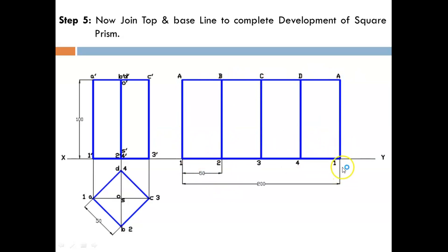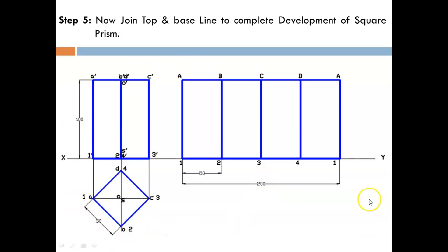After one complete rotation of the square prism, the total base length of the development equals the perimeter of the square — that is 50 × 4 = 200 mm. This is the complete development of the lateral surface of the square prism as per the given question. I hope the idea is very clear to you. Thank you very much.